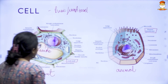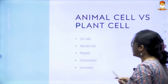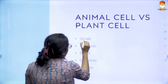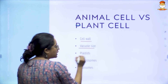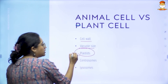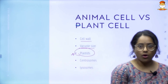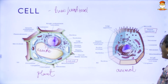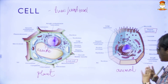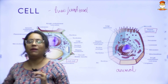Coming to some other major differences, let's have a table to understand. I told you about the cell wall and the vacuole size. Then comes an important feature called plastids. Animal cells generally do not have plastids — in fact, plastids are absolutely absent in animal cells. What are plastids? You would have heard something called chloroplast.